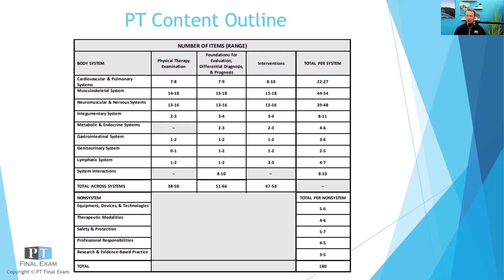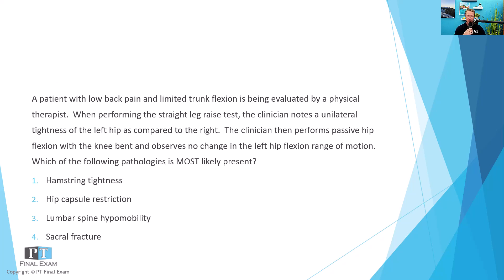Now let's dive into our practice question, related to system interactions. A patient with low back pain and limited trunk flexion is being evaluated by a physical therapist. When performing the straight leg raise test, the clinician notes unilateral tightness of the left hip compared to the right. The clinician then performs passive hip flexion with the knee bent and observes no change in left hip flexion range of motion. Which of the following pathologies is most likely present?